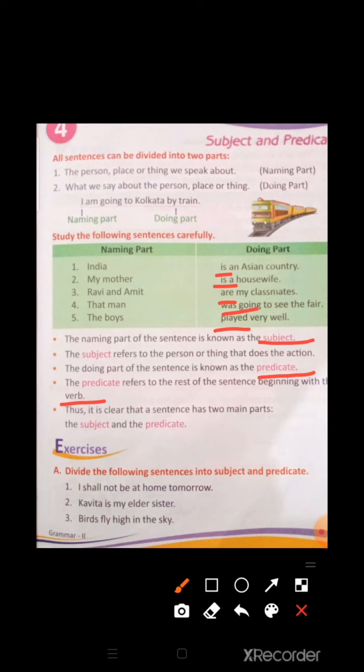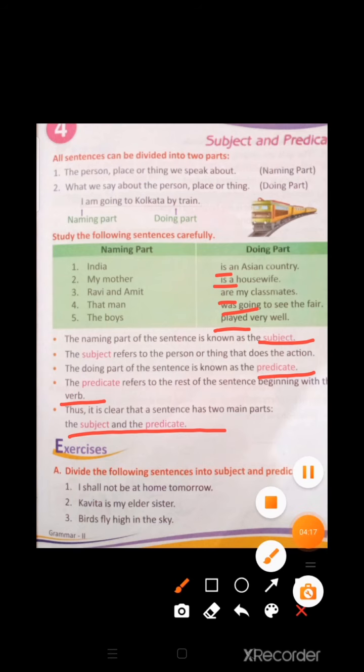Thus, it is clear that a sentence has two main parts: the Subject and the Predicate. I hope students, it is clear to you.